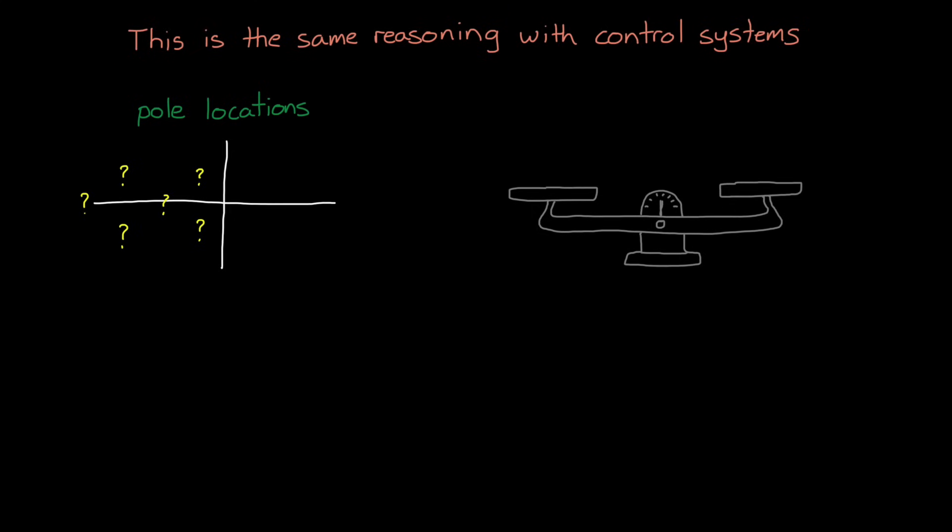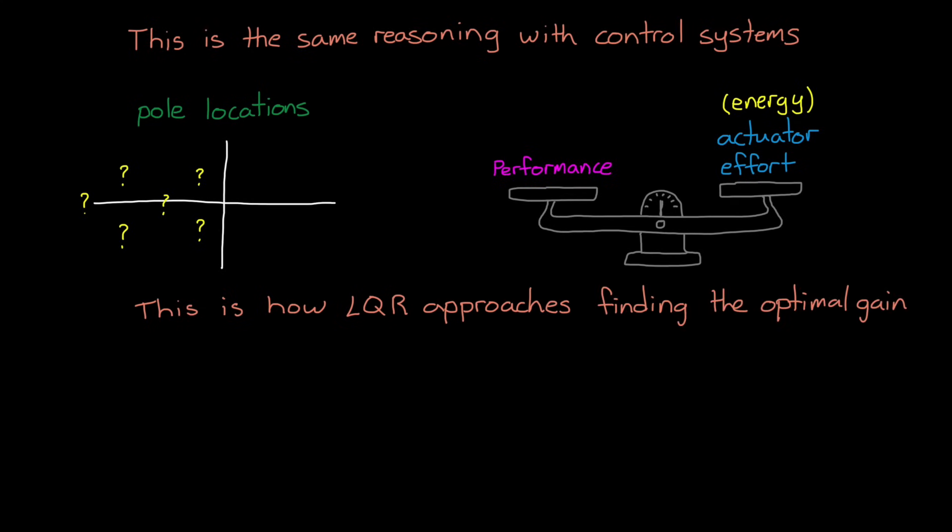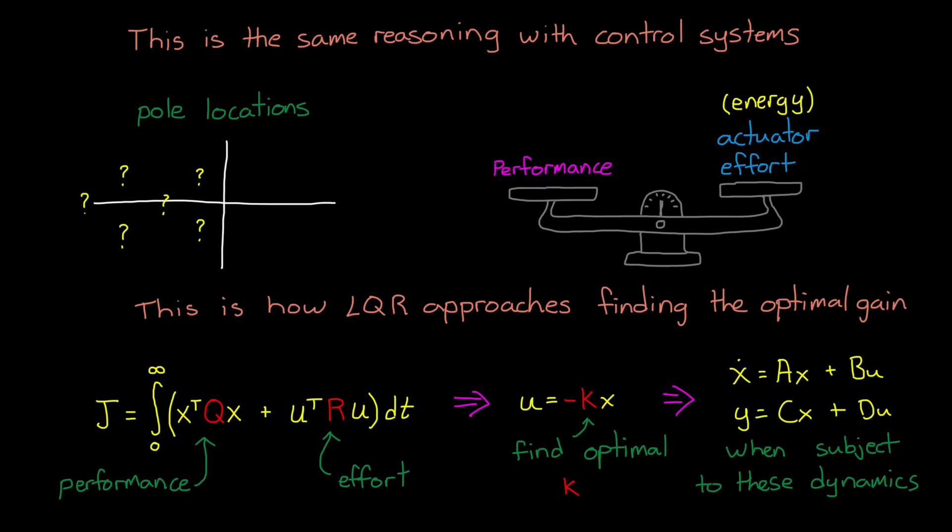And this is exactly the same kind of reasoning we do when designing a control system. Rather than think about pole locations, we can think about and assess what is important to us between how well the system performs and how much we want to spend to get that performance. Of course, usually how much we want to spend is not measured in dollars, but in actuator effort or the amount of energy it takes. And this is how LQR approaches finding the optimal gain matrix. We set up a cost function that adds up the weighted sum of performance and effort over all time, and then by solving the LQR problem, it returns the gain matrix that produces the lowest cost, given the dynamics of the system.